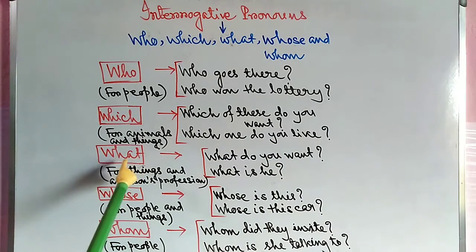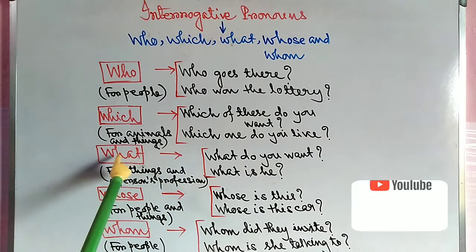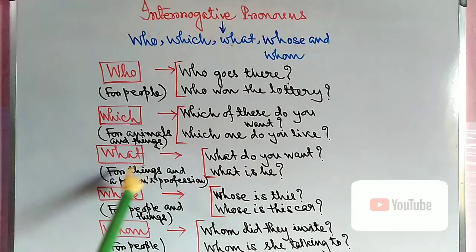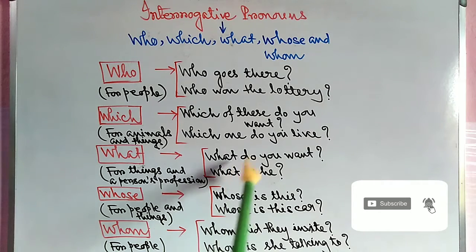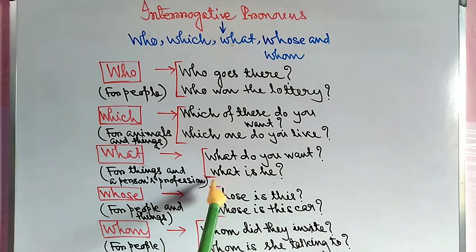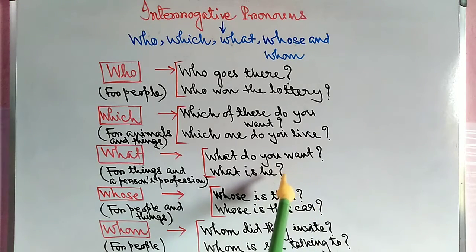Next, what. What is applied to things and a person's profession. What pronoun — kono jinnisher khetre vabhar kara hoi. For example, what do you want? Tumhi kichau. What is he? Say ke. For example, he is a doctor. Tokon question kara hollet, pronoun use kara hovay. What is he.